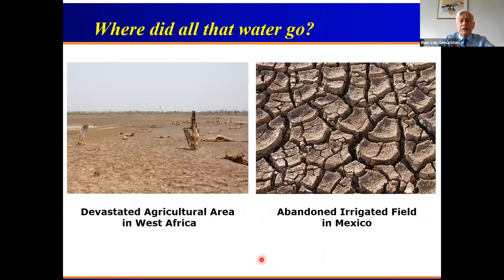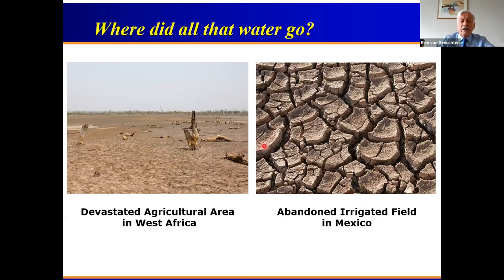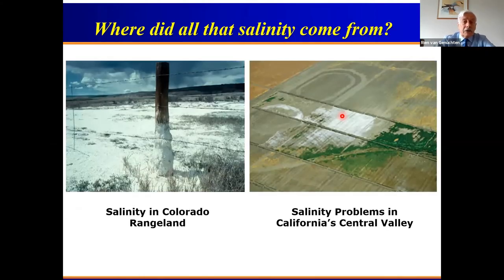I want to show two different applications, one where we looked at the problems of fresh water. The challenges are enormous. You can see two slides — one from a devastated agriculture area in West Africa, another from an abandoned irrigated field in Mexico. These are symptomatic of many other cases; we have quite a few of these abandoned irrigated fields in northeast Brazil, India, the Middle East, North Africa. Not only freshwater issues but also contaminants, and one we focused on a lot was salinity.